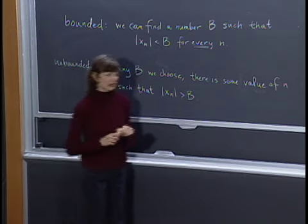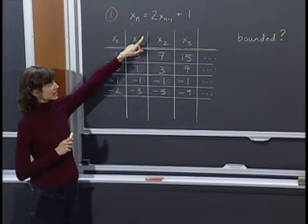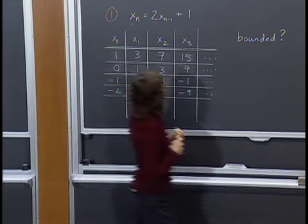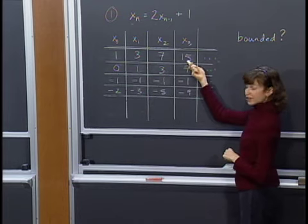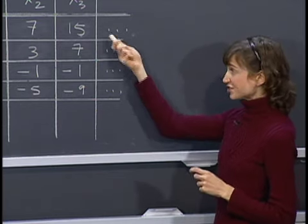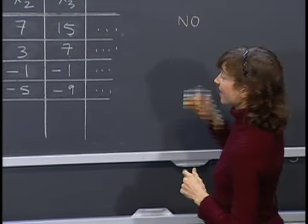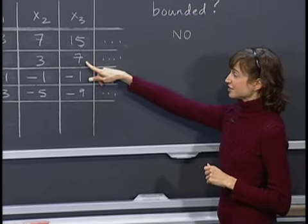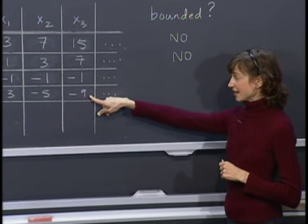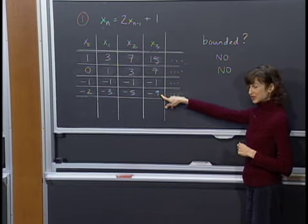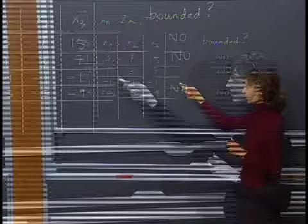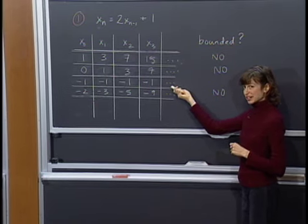Let's look at the example we explored earlier: xn = 2·x(n-1) + 1. Which trajectories are bounded and which are unbounded? The first trajectory — starting at x0 = 1 — continues to grow; each new term is more than twice as big as the one before, so it heads toward positive infinity and is unbounded. The same is true for x0 = 0. The trajectory starting at x0 = -2 gets more and more negative with growing absolute values — also unbounded. In fact, the only bounded trajectory of this difference equation is the one where we start with x0 = -1 and get -1 for the entire trajectory.